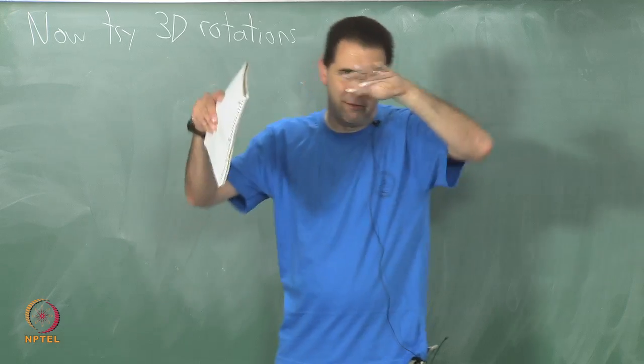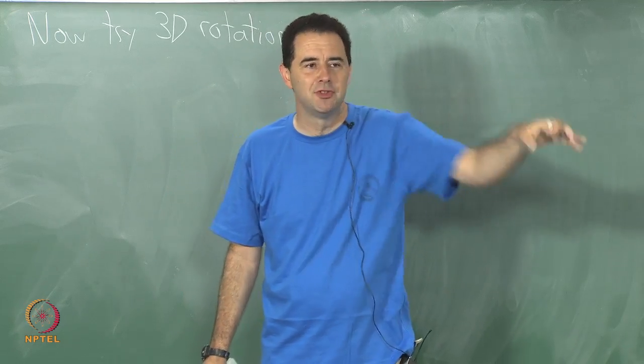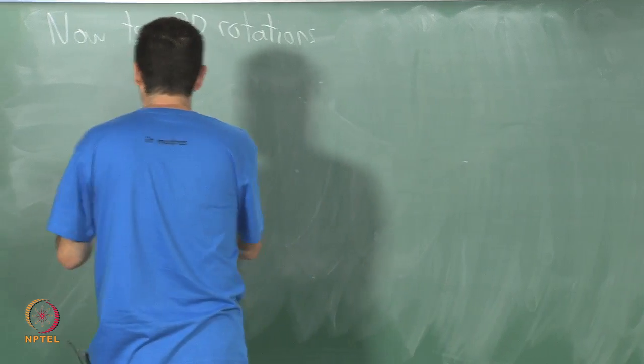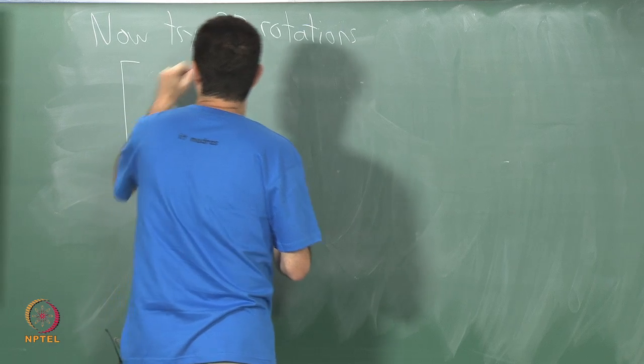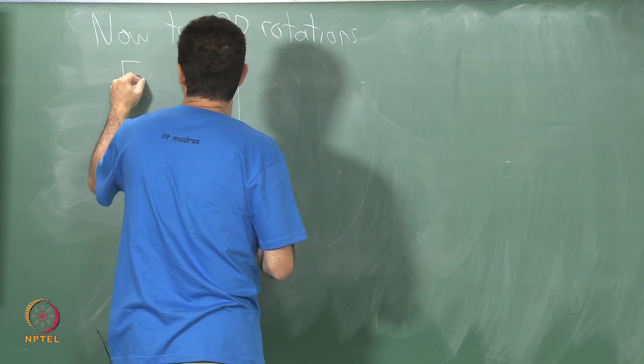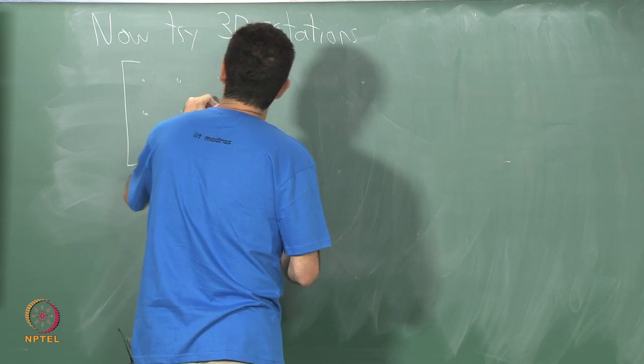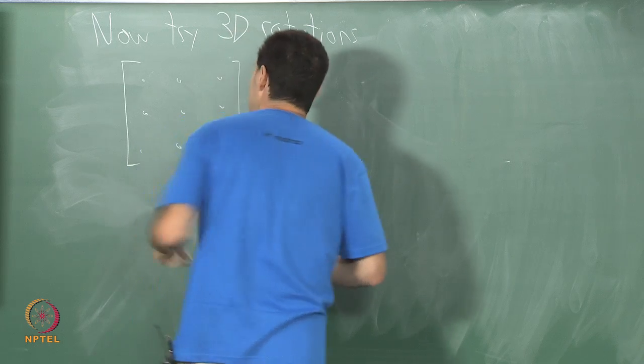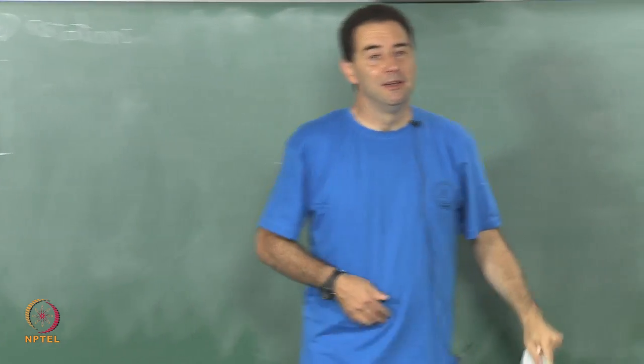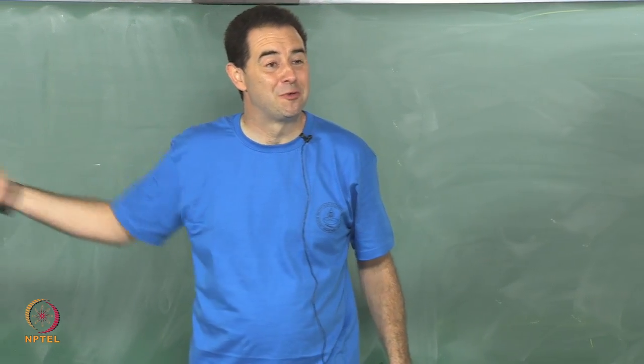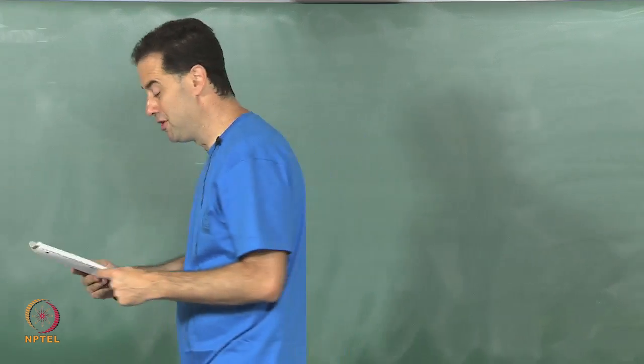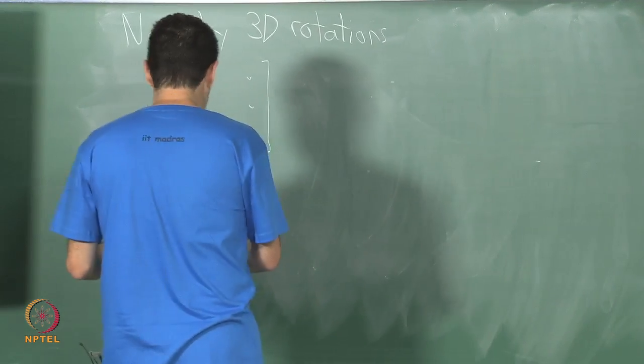We have bigger matrices now. I will just write some dots here. You can fill in the m's if you like. Now I have 9 degrees of freedom for a 3 by 3 linear transformation with real valued entries here. We start off with 9 dots.